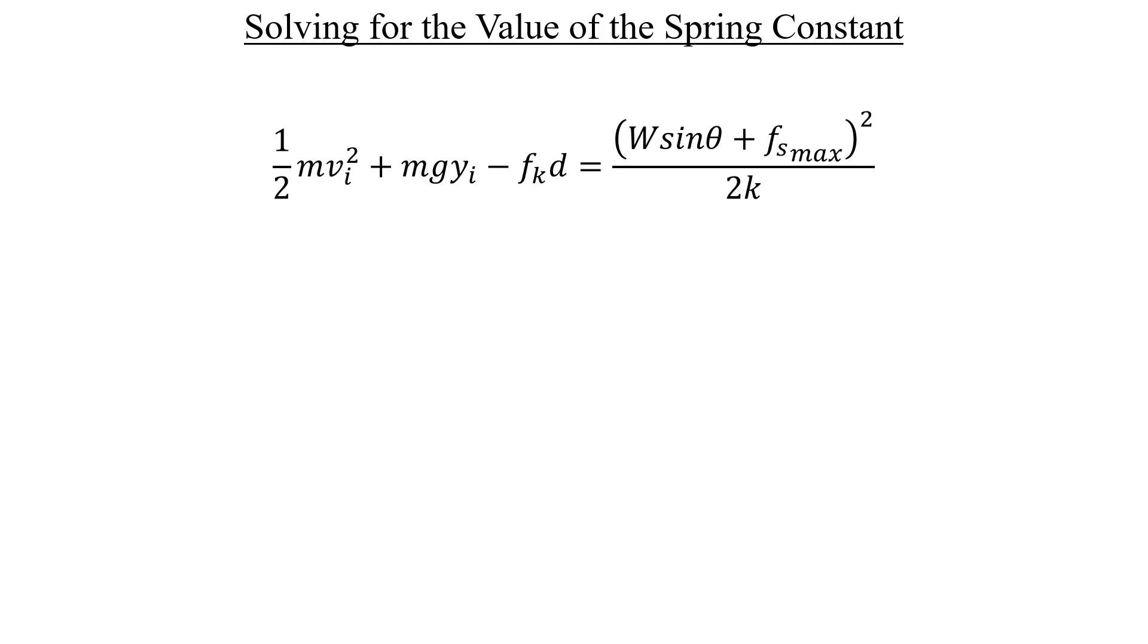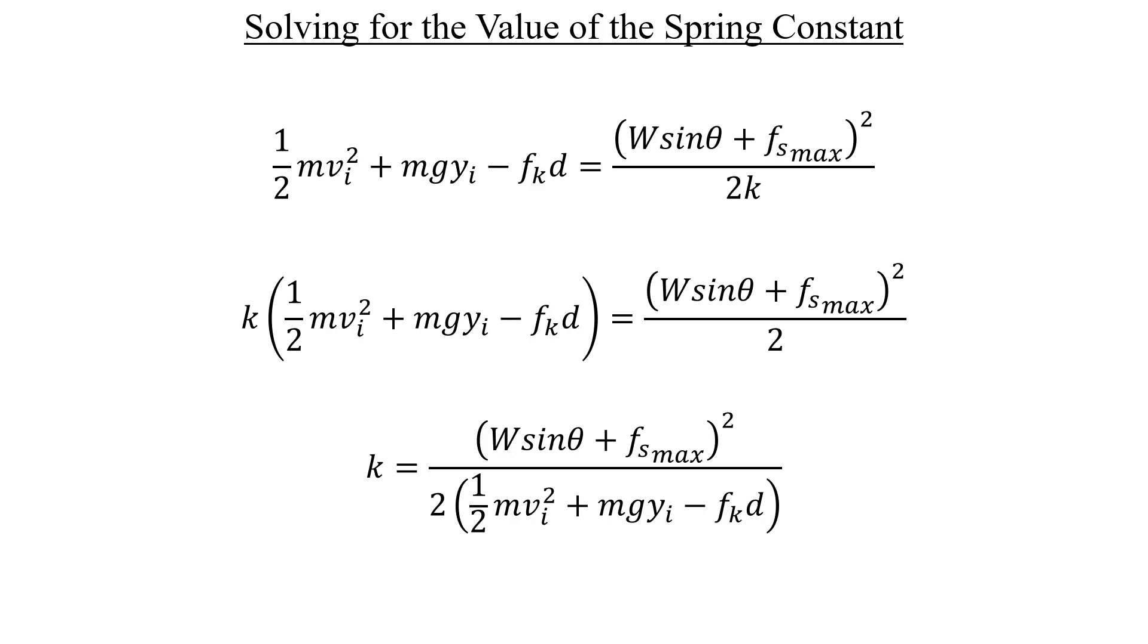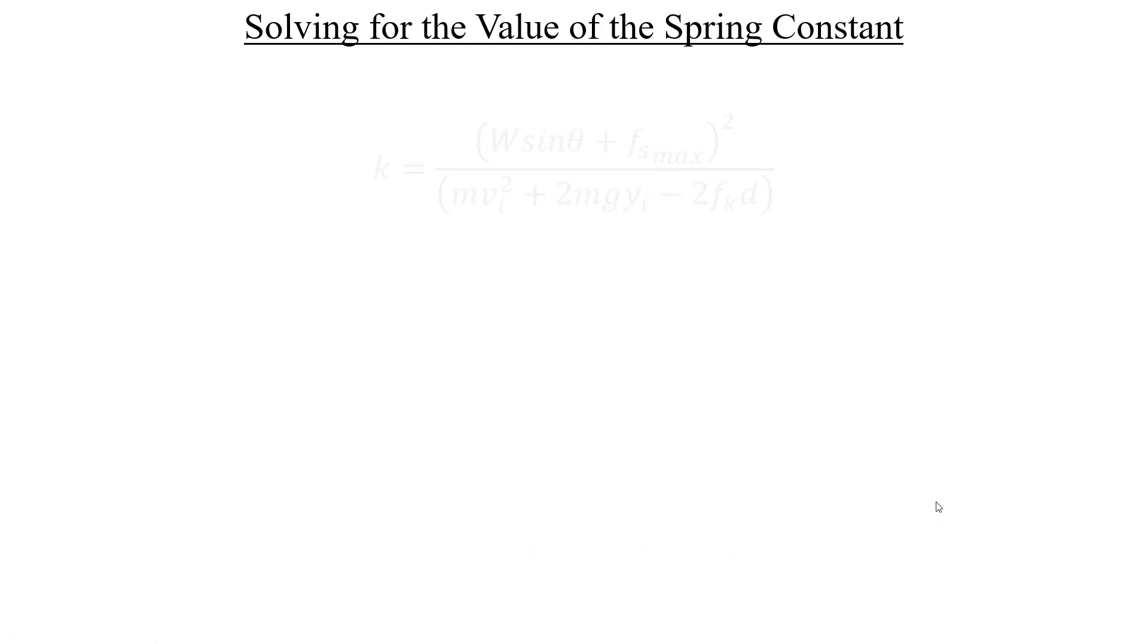Next, let's multiply k on both sides and then divide out the sum of energies in the parentheses on the left. There's a coefficient of two hanging out here, so let's also distribute that in. Once we do that, we're ready to start plugging in some numbers.